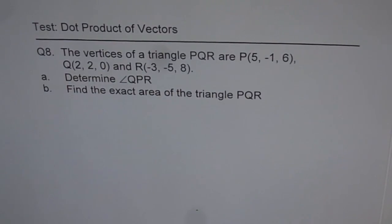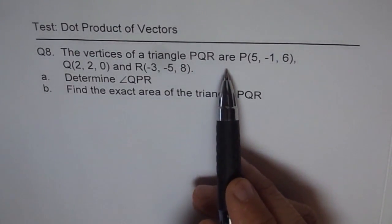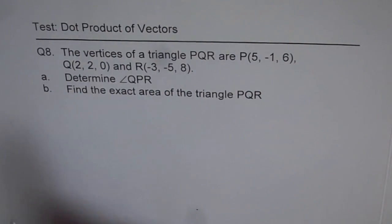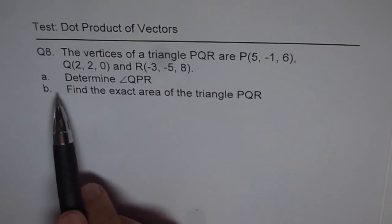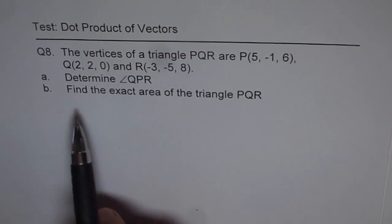Here is question number eight. This is for you to practice for the test on dot product of vectors. Question eight: The vertices of a triangle PQR are P(5, -1, 6), Q(2, 2, 0) and R(-3, -5, 8).